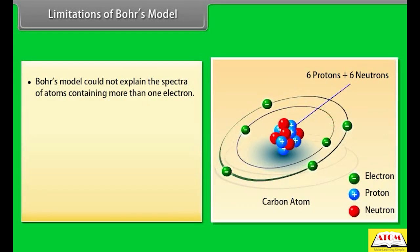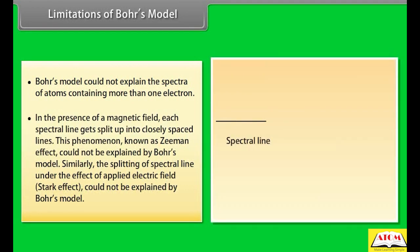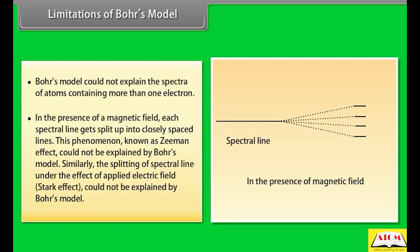Limitations of Bohr's model: 1. Bohr's model could not explain the spectra of atoms containing more than one electron. 2. In the presence of a magnetic field, each spectral line gets split into closely spaced lines — this phenomenon, known as the Zeeman effect, could not be explained by Bohr's model. Similarly, the splitting of spectral lines under an applied electric field — the Stark effect — could not be explained by Bohr's model.